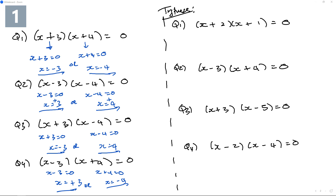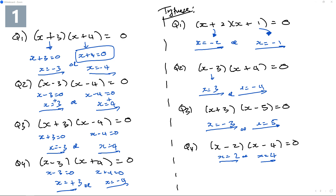Generally you would get two marks for each question. Now let's complicate this just a little bit by bringing in one of the brackets with a coefficient — a number in front of x.